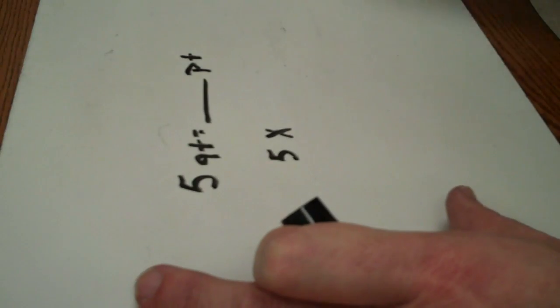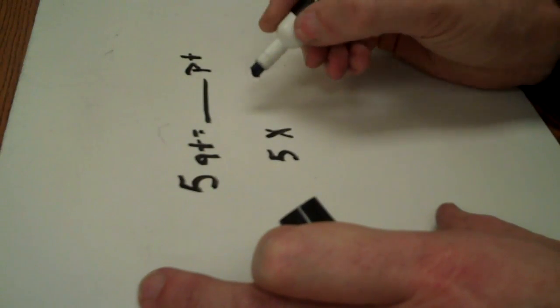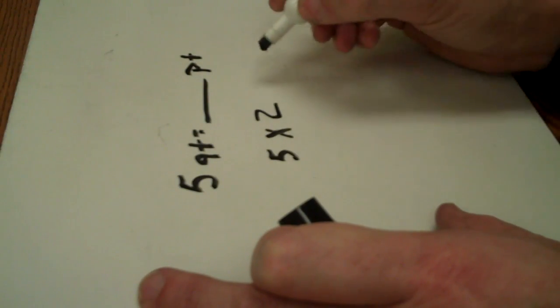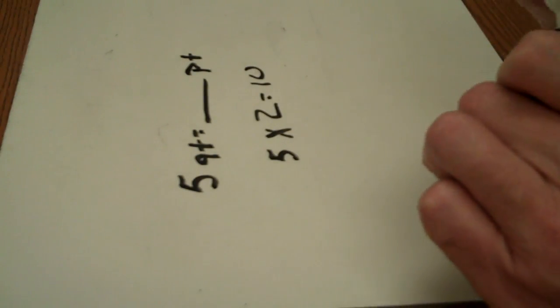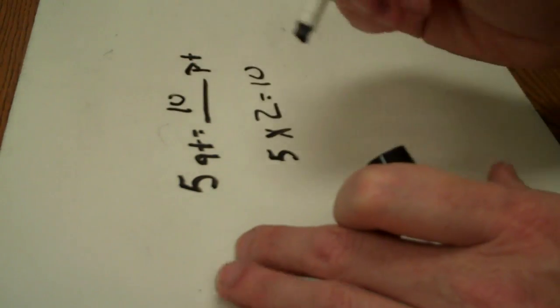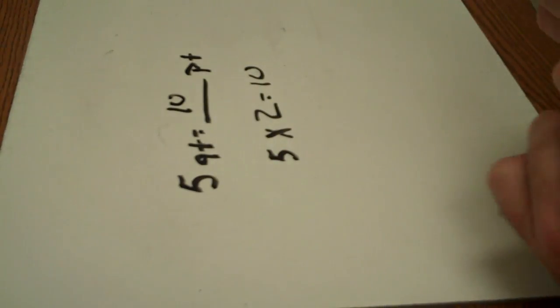Okay? So there's my other number that I need. And then five times two equals ten. So, the answer to that would be five quarts equals ten pints.